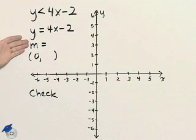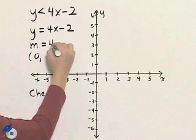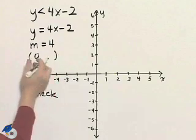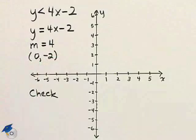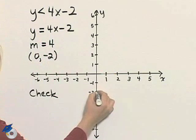The slope of this line is 4 and the y-intercept is (0, -2). I can plot the y-intercept (0, -2) here.